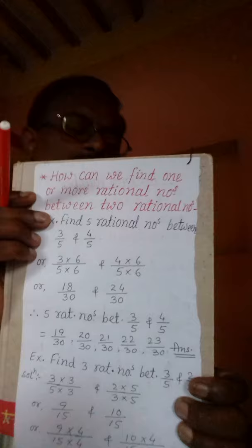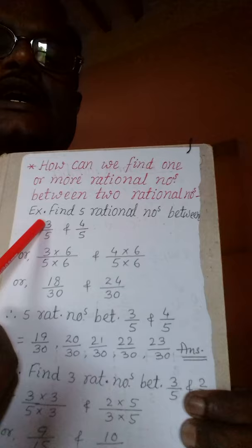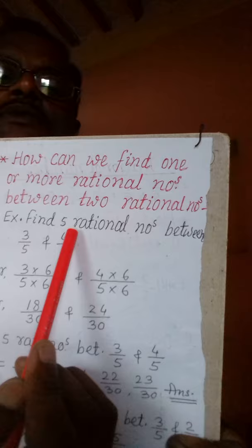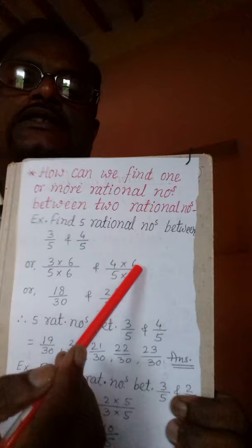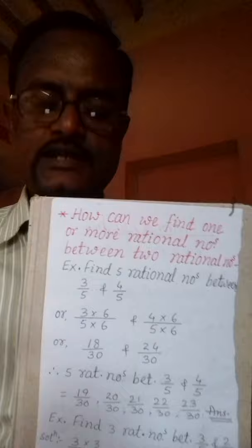इस तरह के question में सबसे पहले ध्यान दें कि denominator हमारा same है कि नहीं है। इसमें denominator same है, लेकिन 3 के बाद कोई gaping नहीं है। तब क्या करेंगे — बहुत आसान है। अगर आपको 5 rational number बीच में लाने हैं तो उससे एक अधिक number से multiply कर देंगे — जैसे 5 लाना है तो मैंने इन दोनों rational number को 6 से multiply किया।